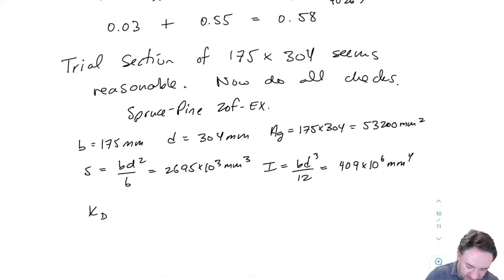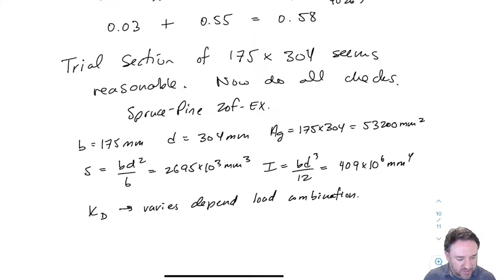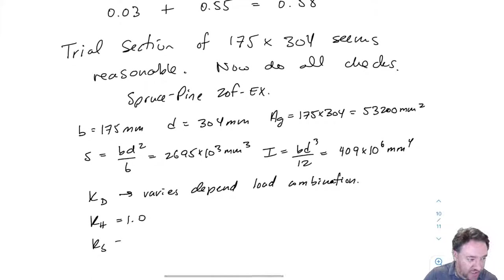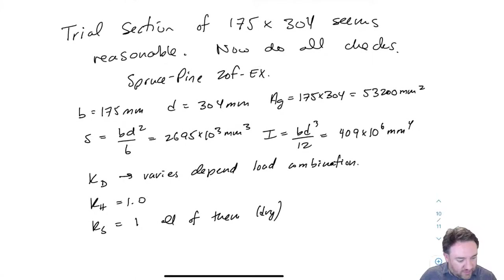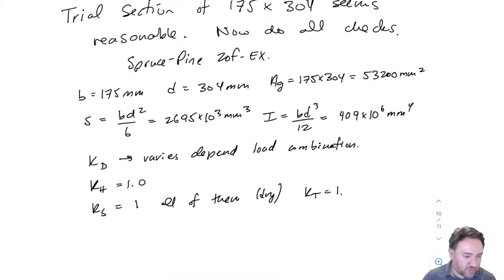What about our K values? So KD varies depending on a load combination. So we know that we have load combinations for all the three KD factors, 0.65, 1.0 and 1.15. So we will have to find each resistance for each of those KD values so that we can check them. Our KH is 1.0. We don't have any system effect happening here. Our KS, all of our KS's, KSB, KSF, KSV, KSC, KSCP, KST, KSE, they're all equal one because we're in dry conditions. And our KT is also equal one. So we're untreated in dry conditions.